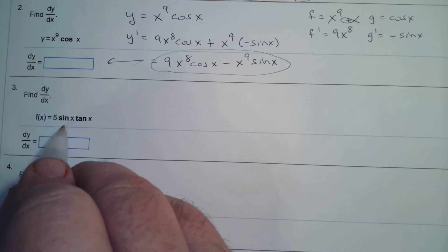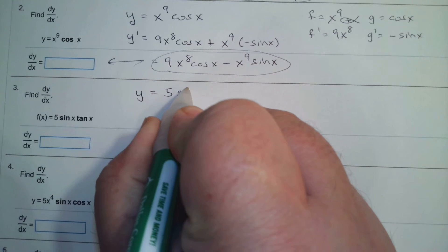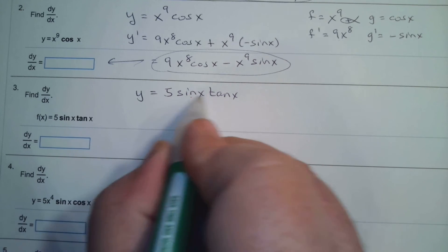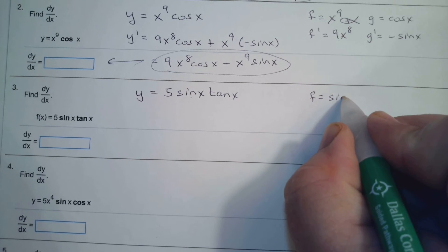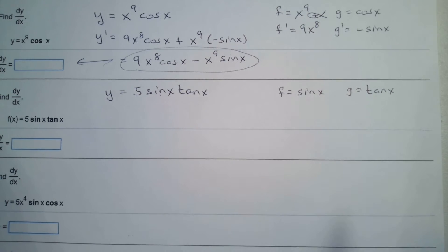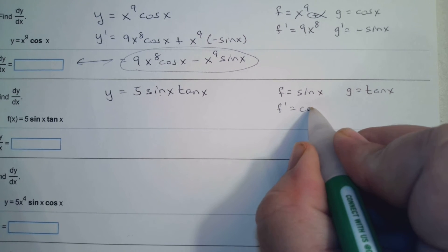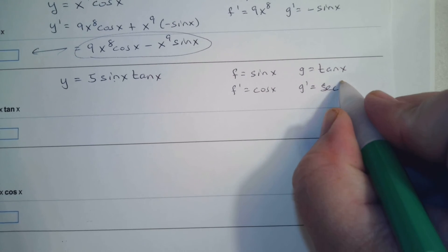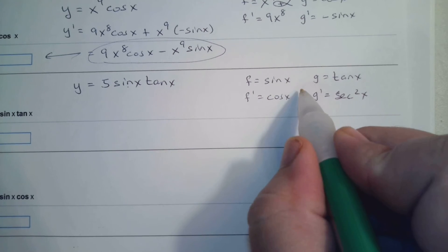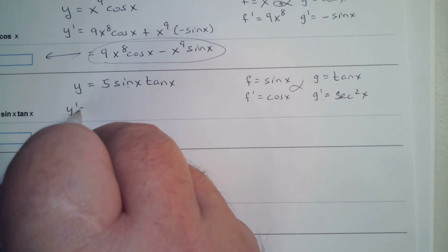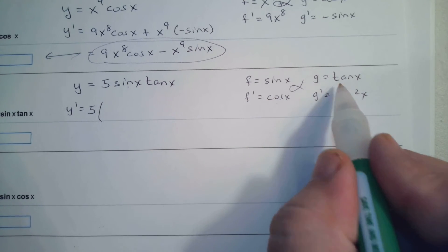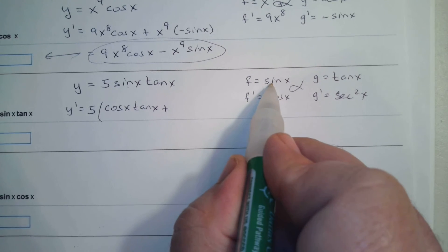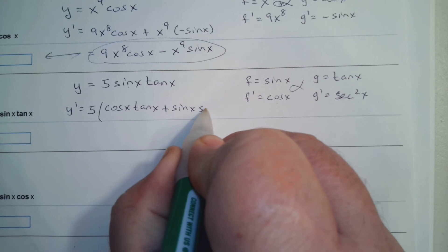The third problem is 5 sine x tangent x. The 5 is a constant multiple, so don't worry about that. We have a product rule here: f is sine x, g is tangent x. Derivative of sine is cosine, derivative of tangent is secant squared. Using the product rule, leaving the coefficient alone: 5 times [cosine x · tangent x plus sine x · secant squared x].